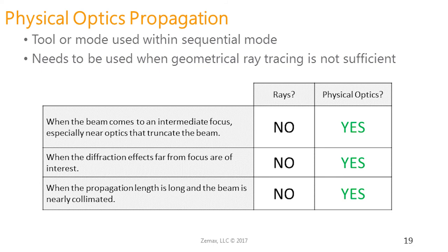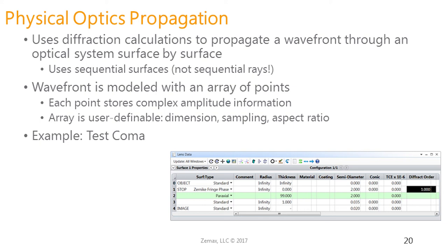Physical optics propagation models these three scenarios using diffraction calculations to propagate a full wavefront through an optical system surface by surface. This mode uses the sequential surfaces defined in your lens data editor, but do not confuse this with sequential rays — the physical optics propagation setup can be completely different from the geometrical rays in your sequential system viewers. The wavefront is modeled with an array of points, where each point stores complex amplitude information — both amplitude and phase. This array is user-definable: you can customize the dimension, sampling, and aspect ratio.